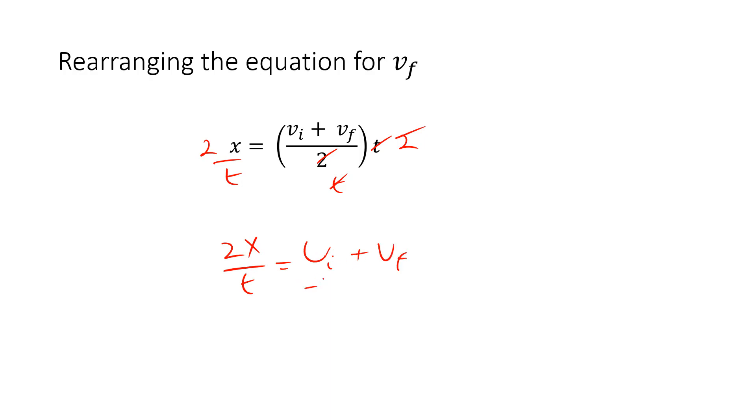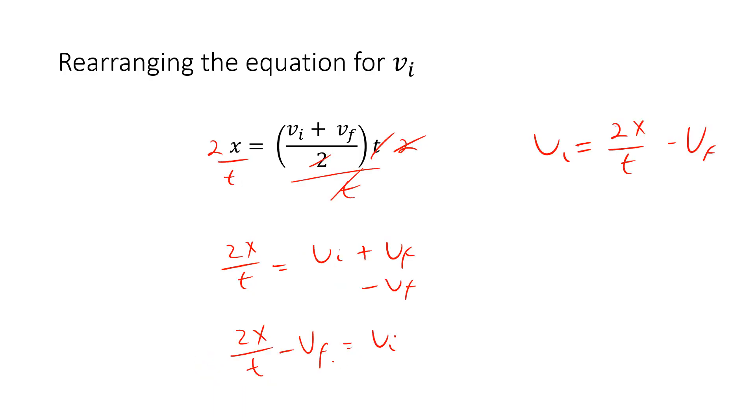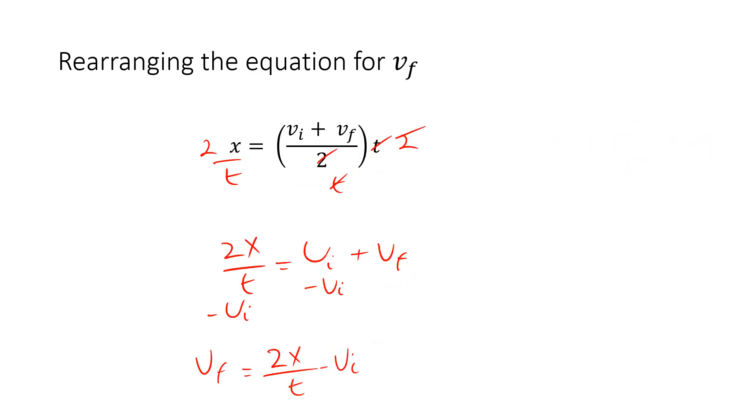But now I'm going to subtract out the vi instead. So minus vi, and I get 2x over t minus vi, and that equals vf. So if you take a look, very similar: 2x over t minus vf equals vi, or 2x over t minus vi equals vf. It's practically the same algebra for those two.